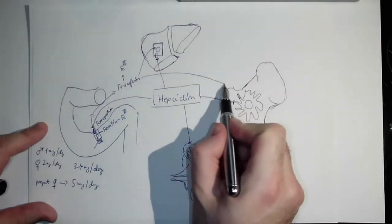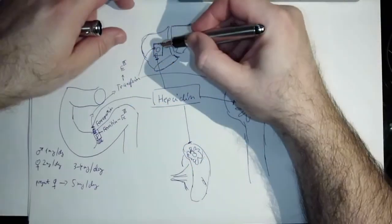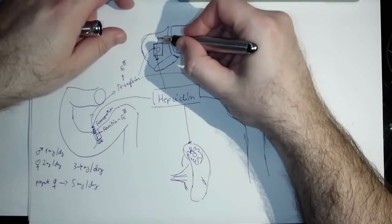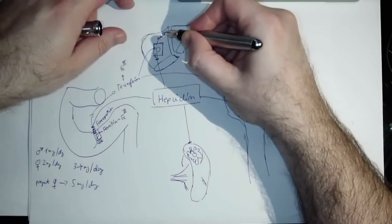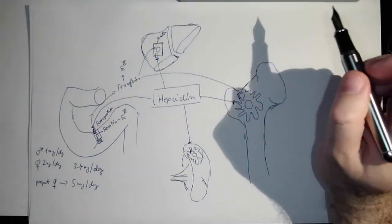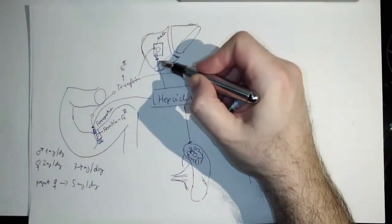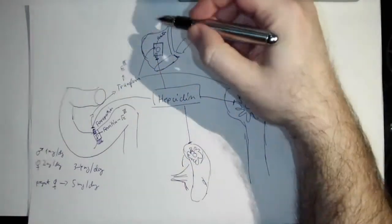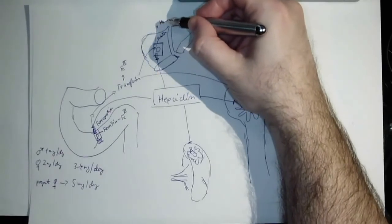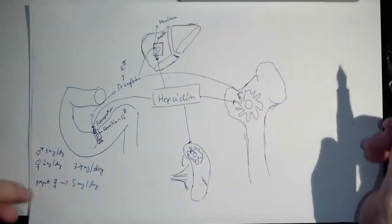Again in hepatocytes, the iron is bound with ferritin and it is stored there for the time. So we have a big storage of iron in the liver, and when we need it again, it can be released through the ferroportin to the bloodstream. Not only ferritin, also there are small amounts of hemosiderin, but majorly it's ferritin which binds the iron.